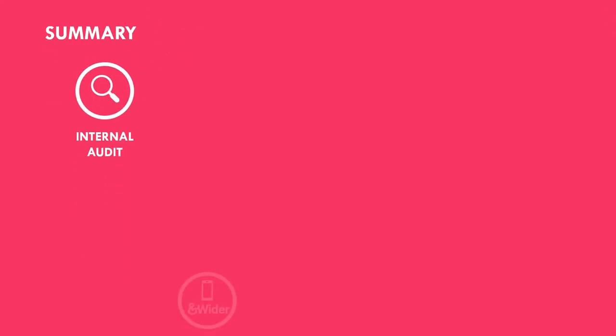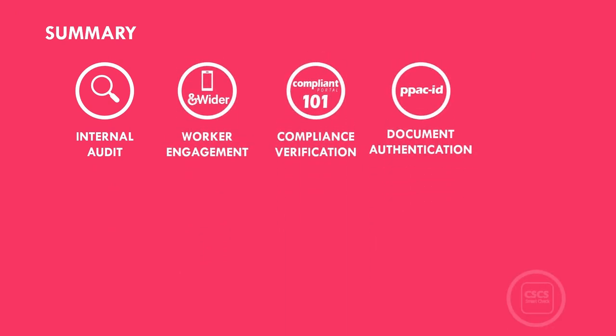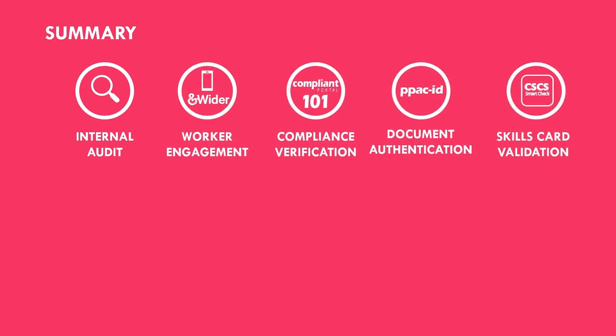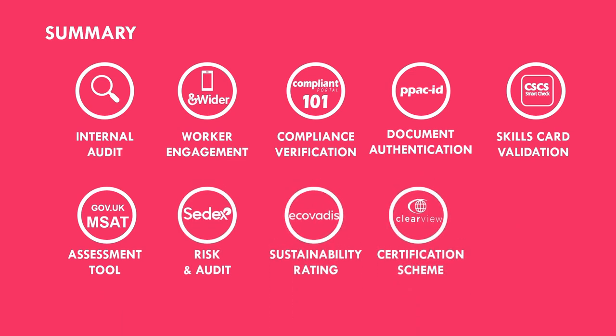So, in summary, these are 10 ways to assess and reduce the risk of modern slavery occurring in your supply chain. Which ones will you choose to use? If you have experience of using these, or other examples, please feel free to leave details and links in the comments.